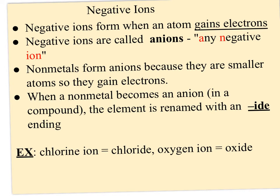So if an atom is losing electrons, that means another atom is gaining them, and in fact it means another atom is pulling or ripping those electrons off the atom that's losing. So these negative ions form because now they have more electrons than protons, and these are called anions, and I think of it as any negative ion. So nonmetals form anions because they're smaller, so it's going to be easier or take less energy to gain electrons than it will be to lose them.